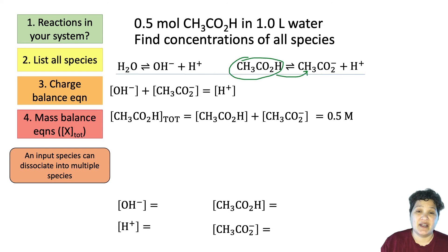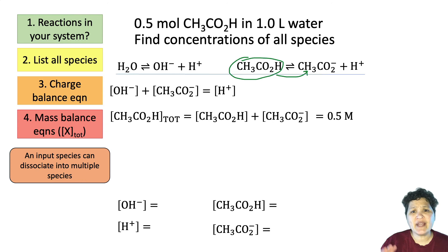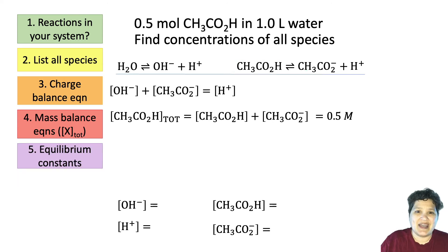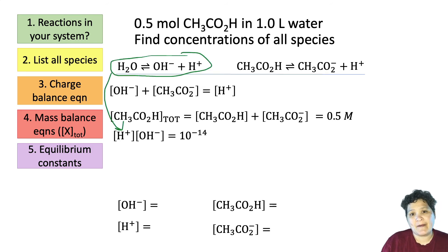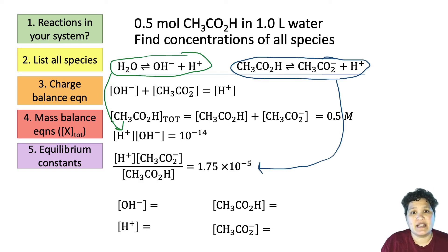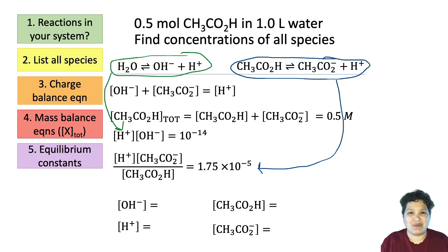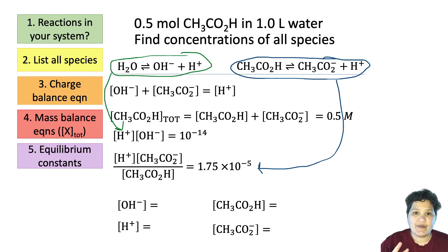Now we get to write our equilibrium constants. Looking at our two reactions, we have two equilibrium constants. The first is the dissociation of water and the second is the Ka expression for acetic acid. You can look up the Ka in the back of your book — or just Google it, since it's a pretty common acid.